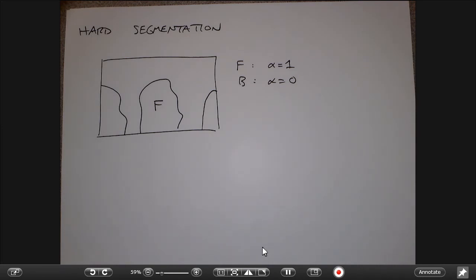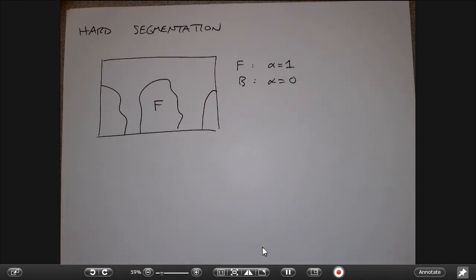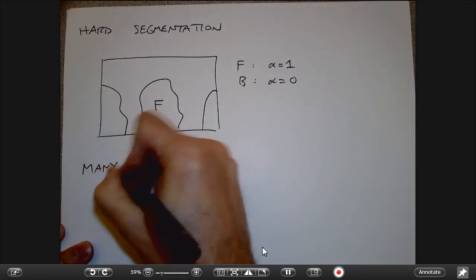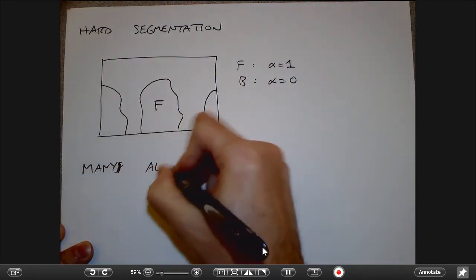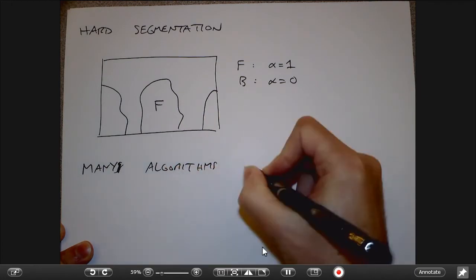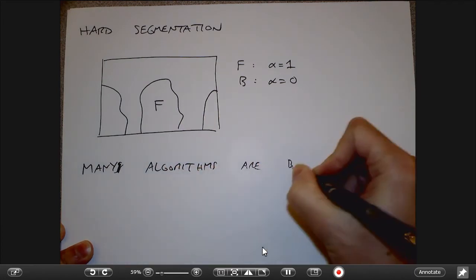The most popular underlying method for doing hard segmentation today is based on graph cuts. Graph cuts is a very useful generic algorithm that many algorithms in computer vision are based on.